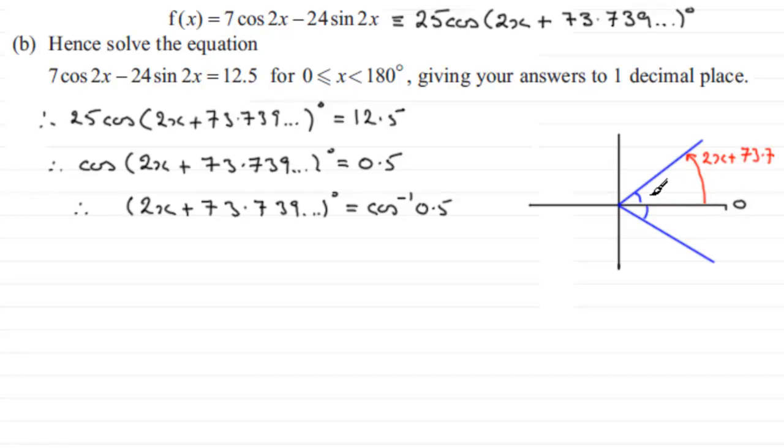Now when we inverse cos 0.5, the answer that we get that comes up on the calculator is 60 degrees. So this angle in here, this little blue bit here is 60 degrees. It means that this one here is also 60 degrees. And we can use this then to help us get the solutions.